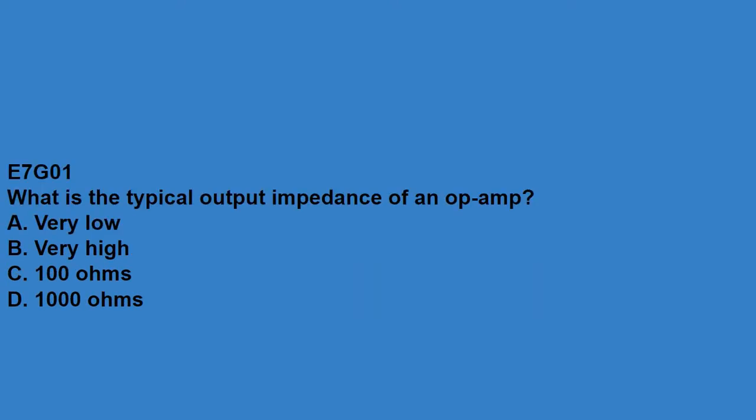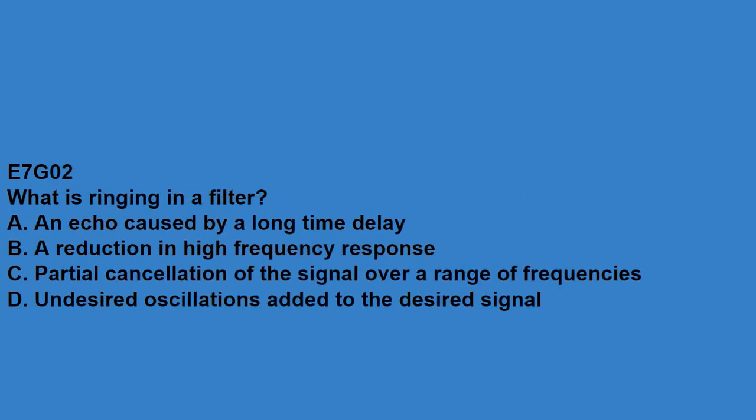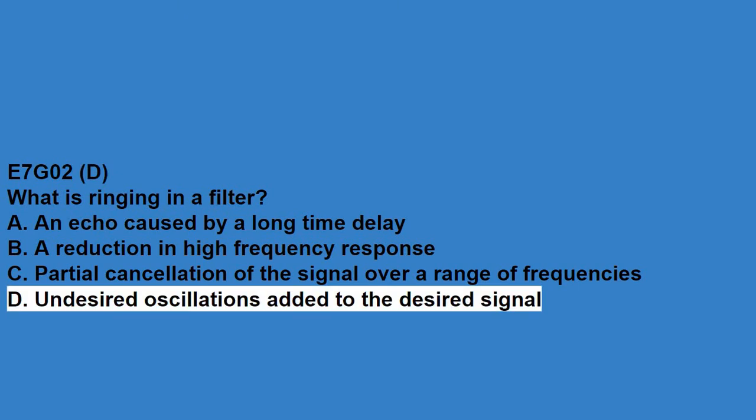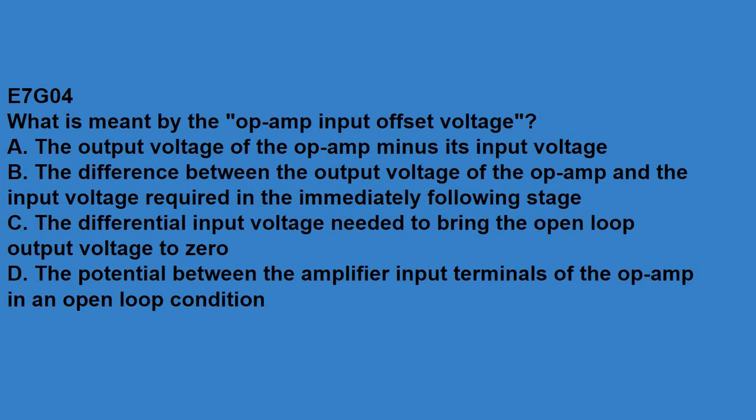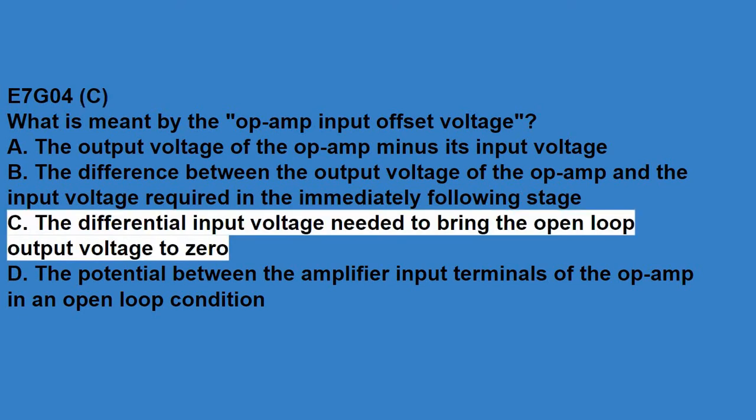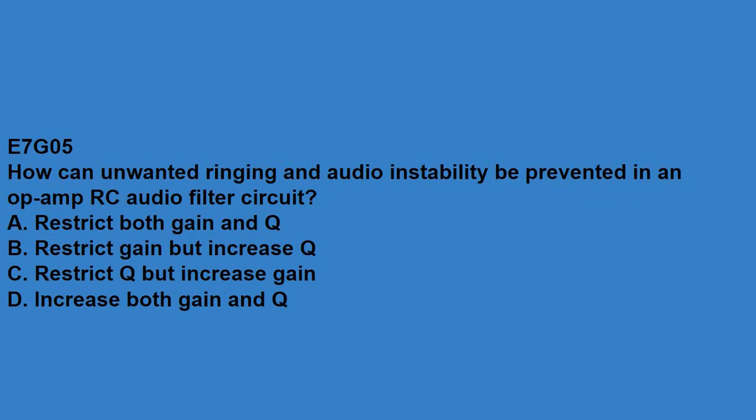E7G01, what is the typical output impedance of an op-amp? Very low. E7G02, what is the typical input impedance of an op-amp? Very high. E7G04, what is meant by the op-amp input offset voltage? The differential input voltage needed to bring the open-loop output voltage to zero. E7G05, how can unwanted ringing and audio instability be prevented in an op-amp RC audio filter circuit? Restrict both gain and Q.